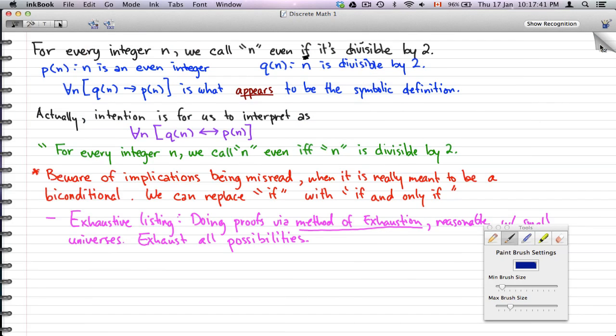Moving on, for every integer n, we call n even if it is divisible by 2. So pn represents n as an integer, and qn represents n is divisible by 2. So we call n even if it's divisible by 2. So pretty much what we're saying is, if n is divisible by 2, that implies n is even. So that's what we have here, the symbolic definition qn implies pn.